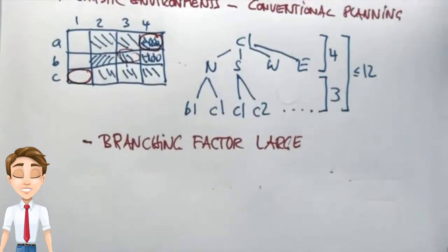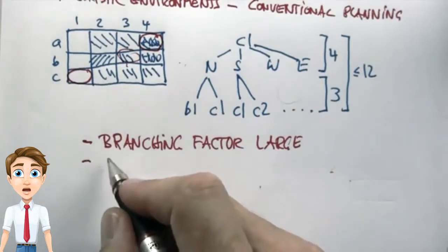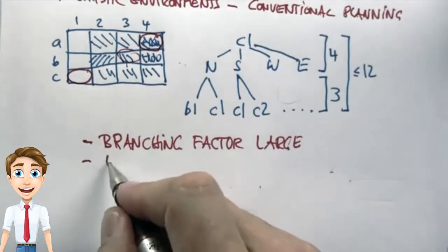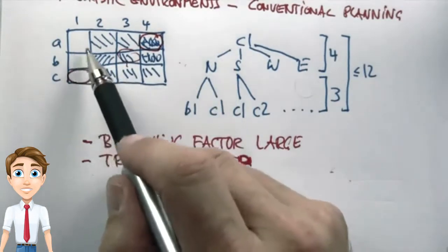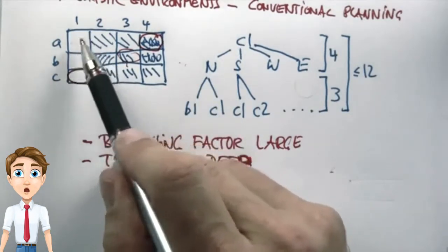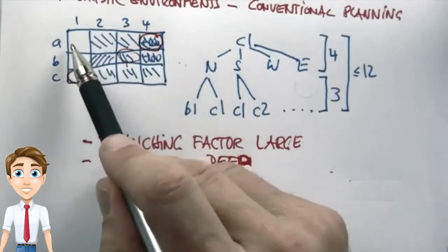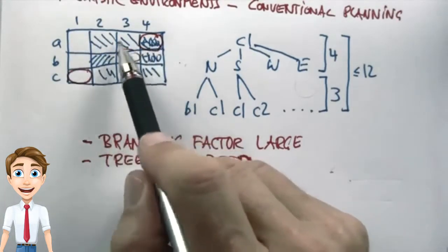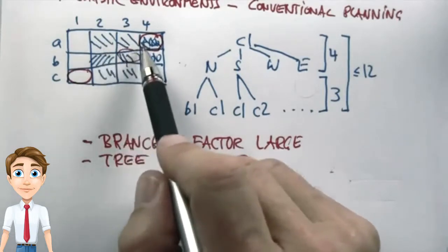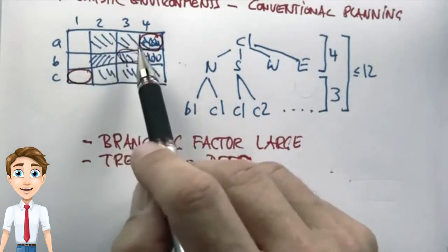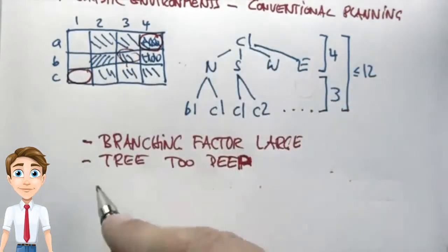There are other problems with the search paradigm. The second one is that the tree will be very deep, because we might be able to circle forever in the area without reaching the goal state. That makes for a very deep tree, and until we reach the goal state, we won't even know it's the best possible action. So conventional planning might have difficulties with basically infinite loops.